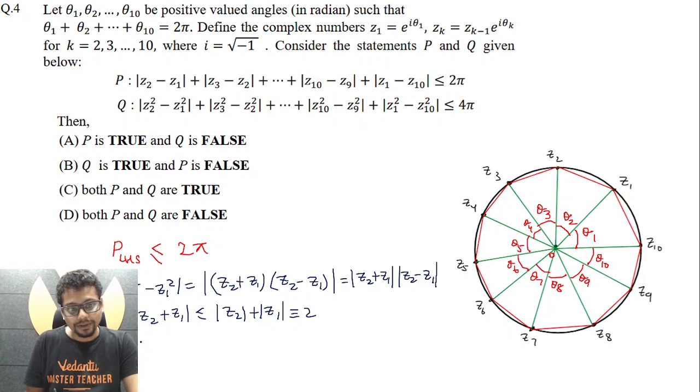So that means left hand side of Q is less than equal to 2 times, if you see carefully, left hand side of P, isn't it? Because this is less than equal to 2, so and so forth. So this whole expression will be less than equal to 2 times left hand side of P. And left hand side of P in turn is less than equal to 2 pi. So that means left hand side of Q would be less than equal to 2 times 2 pi, which is 4 pi, which essentially what statement Q says. So that means statement P and Q both are true.